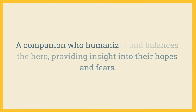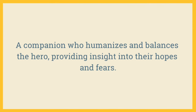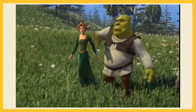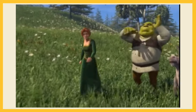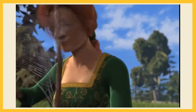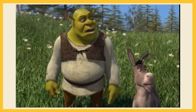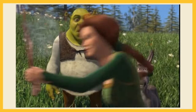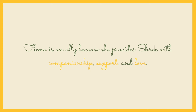Next, we have the ally — a companion who humanizes and balances the hero, providing insights into their hopes and fears. Princess Fiona is Shrek's ally. She is the one who convinces Shrek to rescue her from the dragon-guarded tower, and she is the one who falls in love with him. Fiona is an ally because she provides Shrek with companionship, support and love.